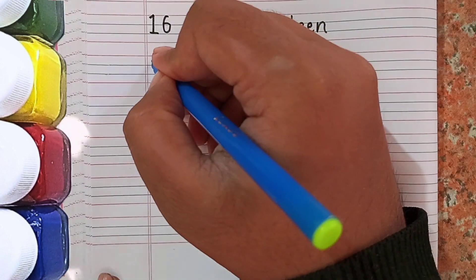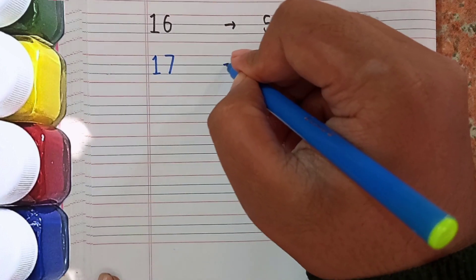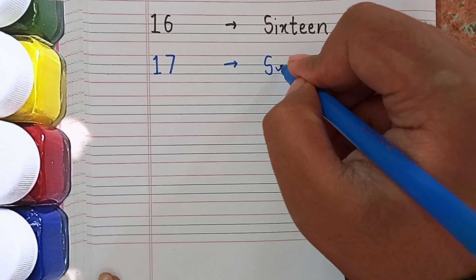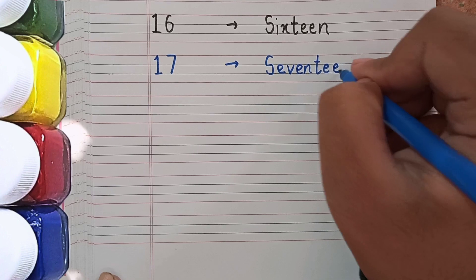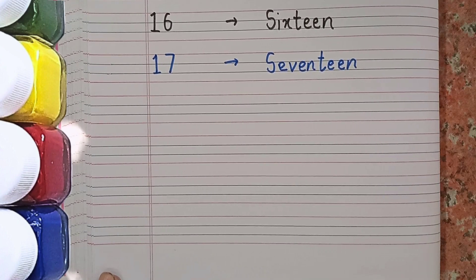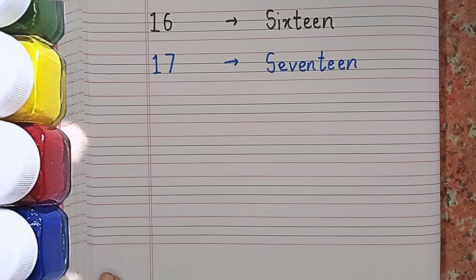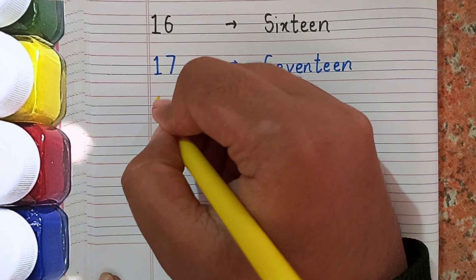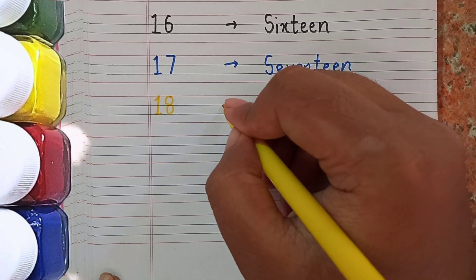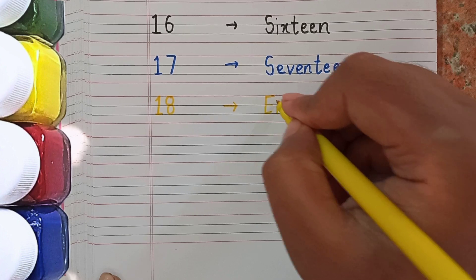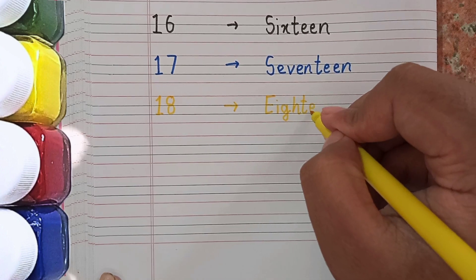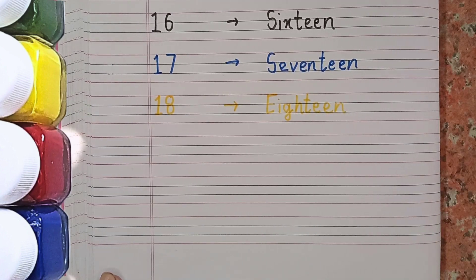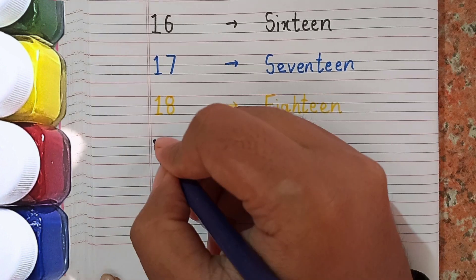After 16 the next number will be 17 and the spelling of 17 is S-E-V-E-N-T-E-E-N. After 17 the next number is 18: E-I-G-H-T-E-E-N.